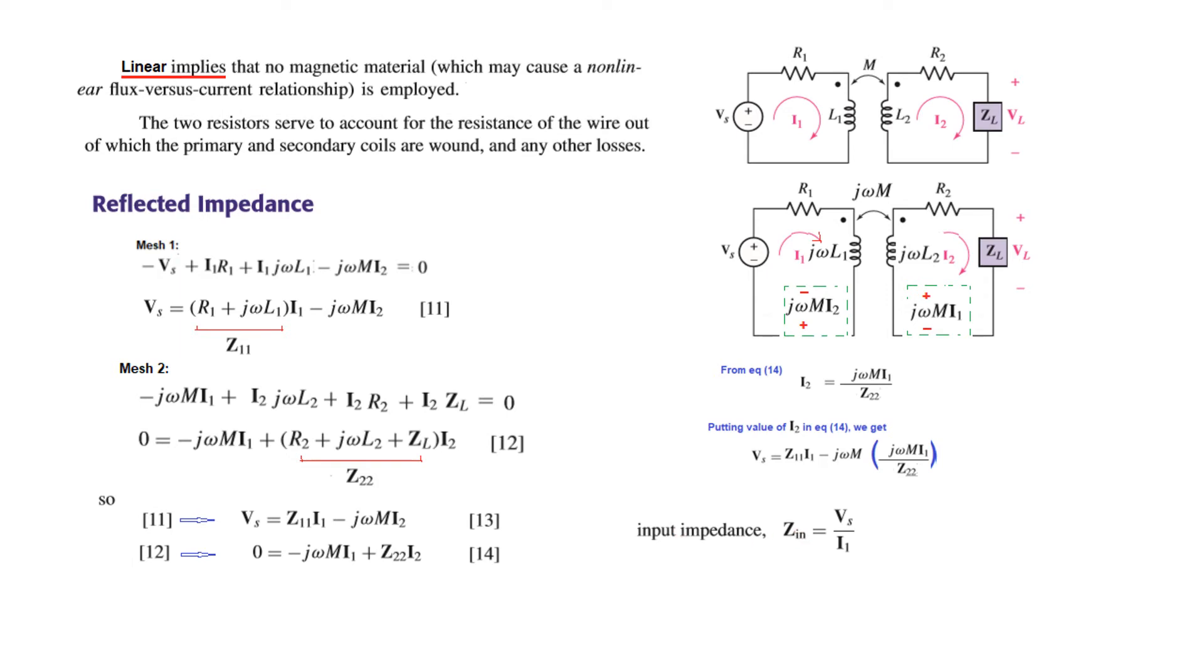The input impedance, if you look from here, is denoted by Zin and is actually Vs divided by I1. Plugging in the value of Vs and canceling I1, we get a simplified equation: Zin equals Z11 minus j omega m squared divided by Z22. This is the equation for input impedance.